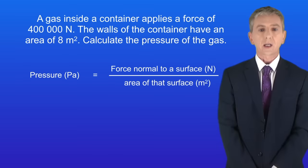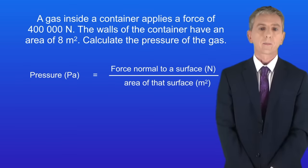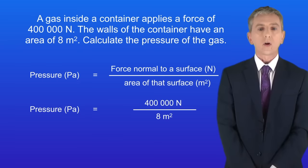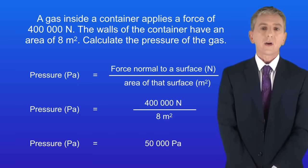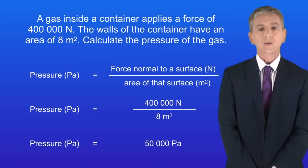Okay we calculate the pressure by dividing the force by the area. In this case the force is 400,000 newtons and the area is 8 meters squared. Dividing 400,000 by 8 gives us a value of 50,000 pascals for the pressure of this gas.